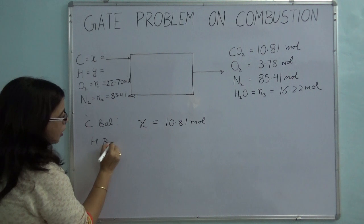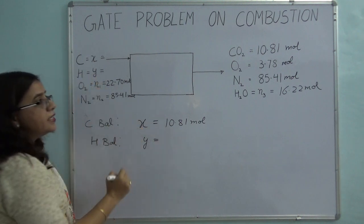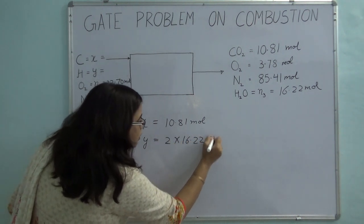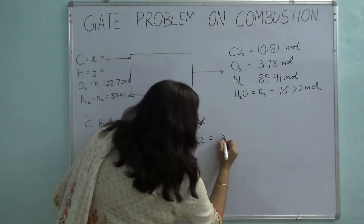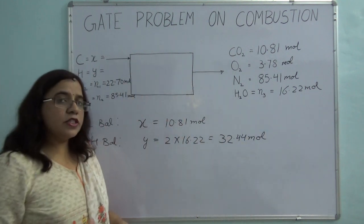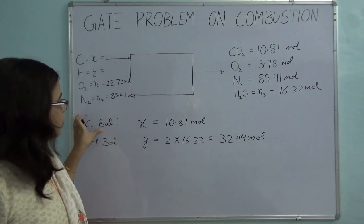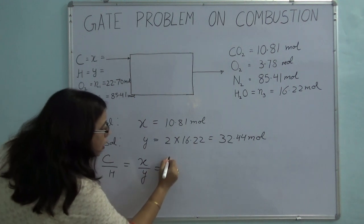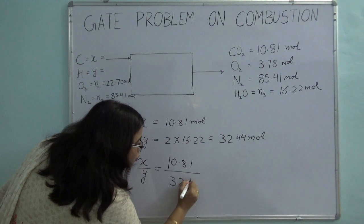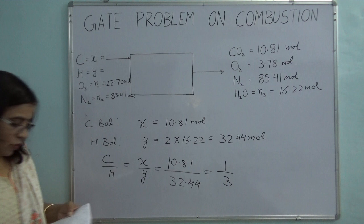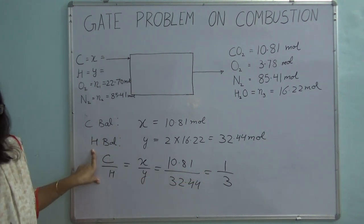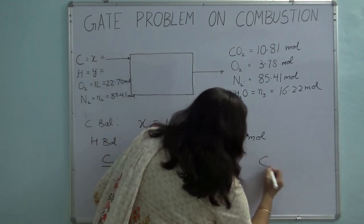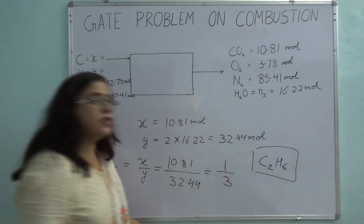For the hydrogen balance: Y moles going in equals 2 × 16.22 moles (hydrogen coming out with water), so Y equals 32.44 moles. The ratio of carbon to hydrogen is X over Y, which is 10.81 divided by 32.44, approximately equal to 1 to 3. So the fuel is probably C₂H₆.